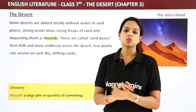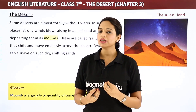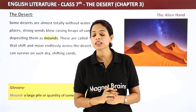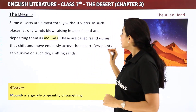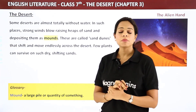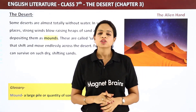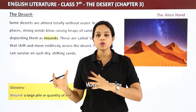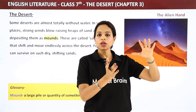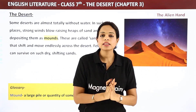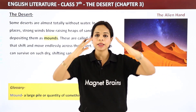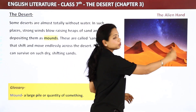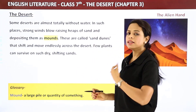Some deserts are almost totally without water. Jahaan pe literally hundreds of kilometers walk karna padta hai for water, and the life is miserable there. In such places, strong winds blow, raising heaps of sand and depositing them as mounds. Jaise woh movies mein hota hai — reth pe chal rahe hain, hawa aa rahi hai, bahut mushkil ho rahi hai. Jo wind hoti hai woh apne saath sand ko udaati hai — aur jahaan woh slow ho jaati hai, wahan sand gir jaati hai, aur aise sand ke mounds develop ho jaate hain. Inko hum kehte hain sand dunes.